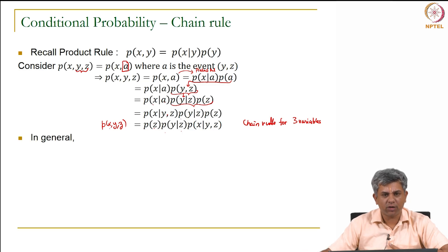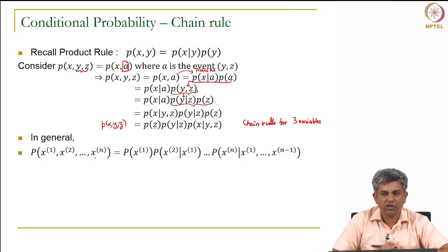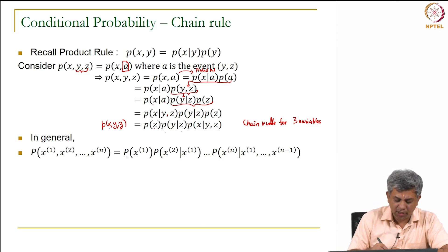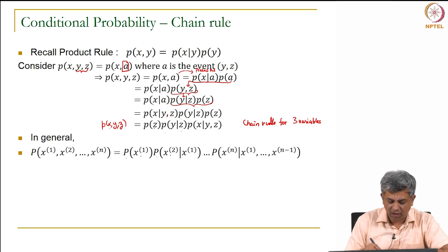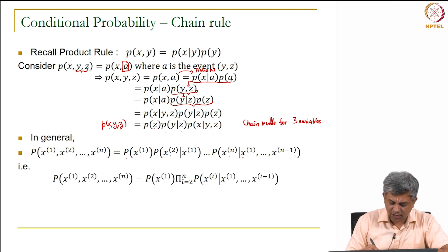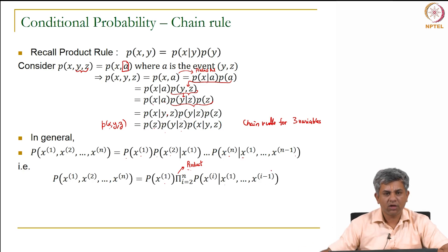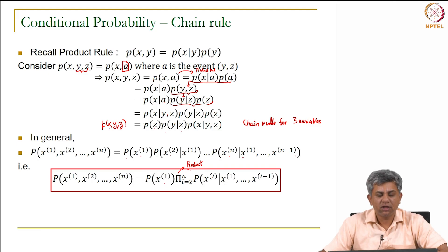We can extend this to n variables. For n events x1 through xn occurring jointly, we write it as the probability the first event occurs, multiplied by the probability the second occurs given the first, and so on until the probability the nth event occurs given the first n−1 occur. In compact notation: P(x1) × ∏(i=2 to n) P(xi | x1,...,xi−1). This is the chain rule of probability.